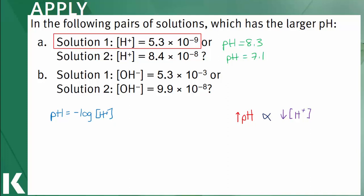In B, we have to be careful. We're asked to compare pH, but we're given the concentration of hydroxide ions. So, let's do this methodically. Solution 1 has a higher concentration of hydroxides compared to solution 2. And thinking about that balance, that means that solution 1 must have a lower concentration of hydrogen ions compared to solution 2. Since the concentration of hydrogen ions is inversely related to pH, solution 1 must have a higher pH or is more correspondingly basic compared to solution 2.